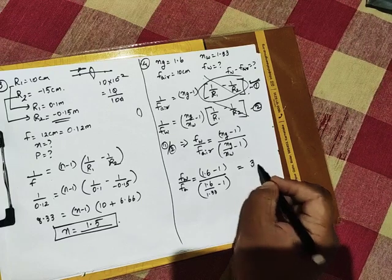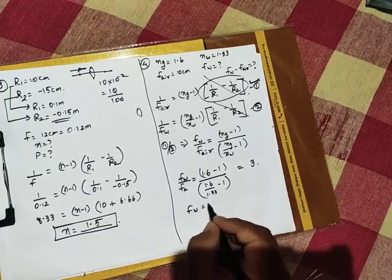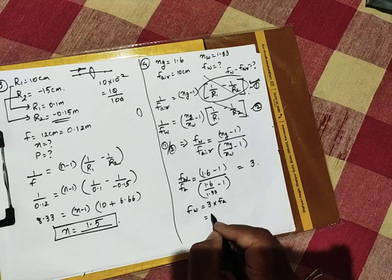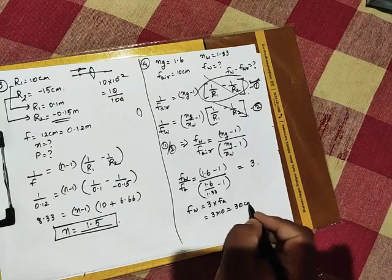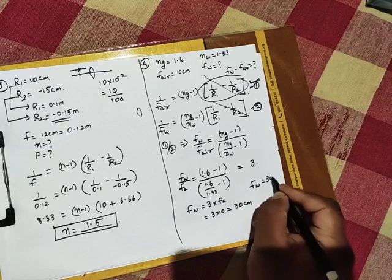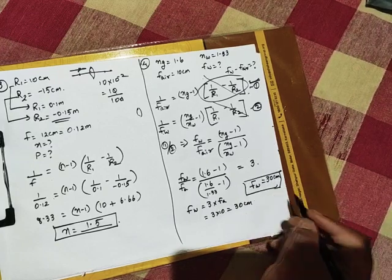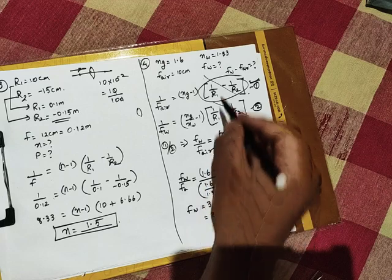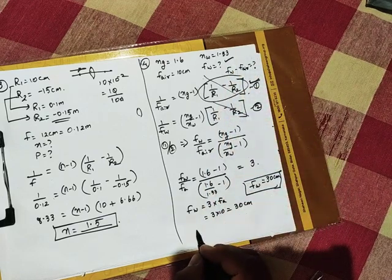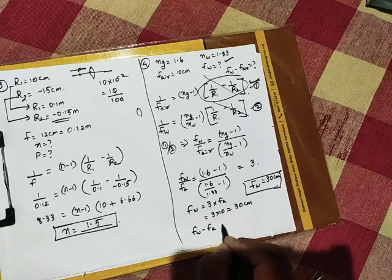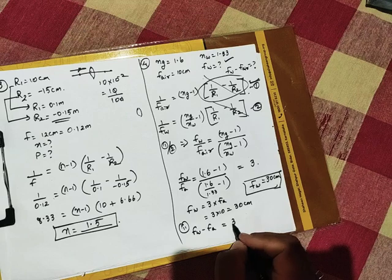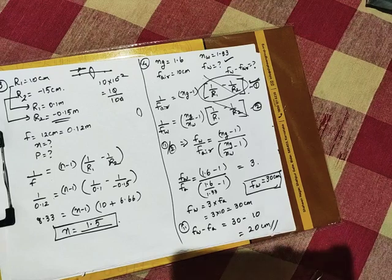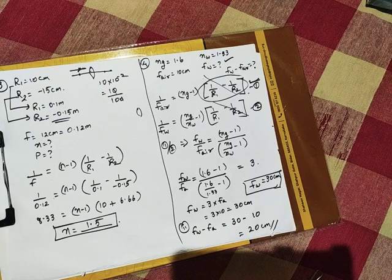When you solve this, fw is equal to 3 times fa. fa is 10 centimeter, so 3 into 10, that is 30 centimeter. So we got fw as 30 centimeter. When the lens is taken from air and put in water, focal length changes from 10 centimeter to 30 centimeter. Then fw minus f air, second part: 30 minus 10, 20 centimeter is your answer.